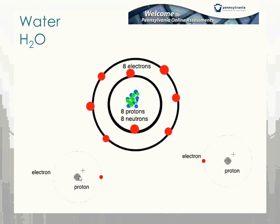Hydrogen has an atomic number of one — one proton, one electron, and actually has no neutrons in its nucleus. That's why they're showing you the little plus sign here. Because this is looking at the first shell, hydrogen wants to do whatever it can to get to two. Atoms will steal, share, or dump off electrons to get to their magic numbers.